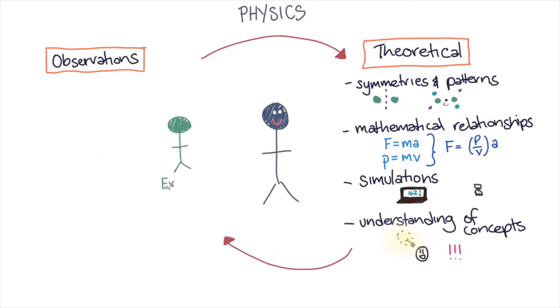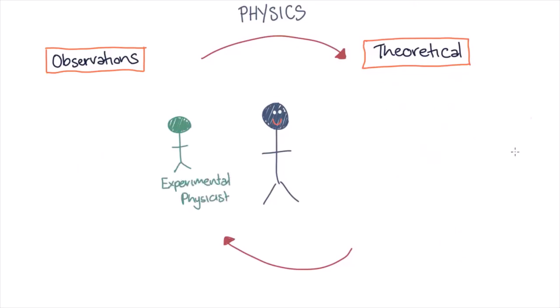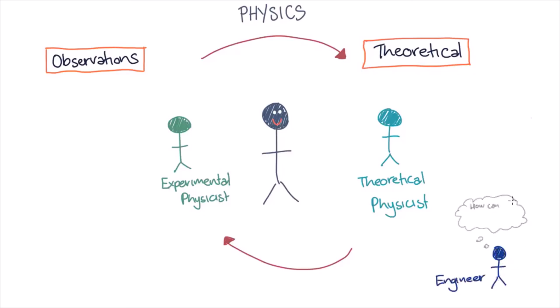Some physicists are more experimental and do more observation physics, and some physicists are more theoretical and look at more fundamental concepts. And then there are physicists who sit somewhere in the middle between observation and theory. There are also those people who choose to go on and do engineering instead and look at how they can apply physics in the real world.